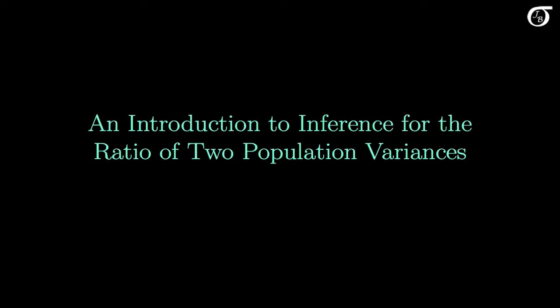Let's look at an introduction to inference for the ratio of two population variances. We'll look at confidence intervals and hypothesis tests based on the assumption of normally distributed populations. And a warning up front: these methods can work very poorly when the normality assumption is violated, so it's always a bit sketchy using them.